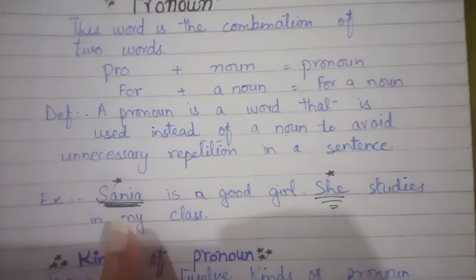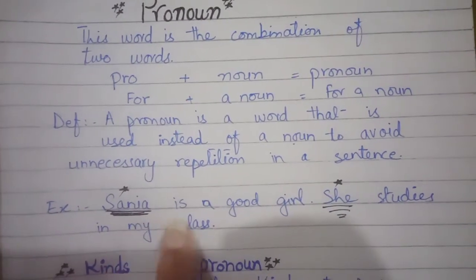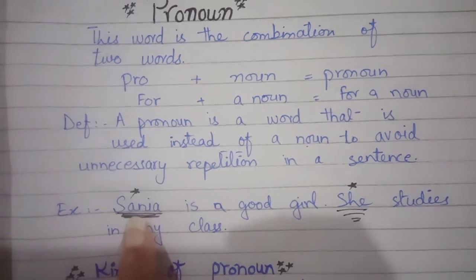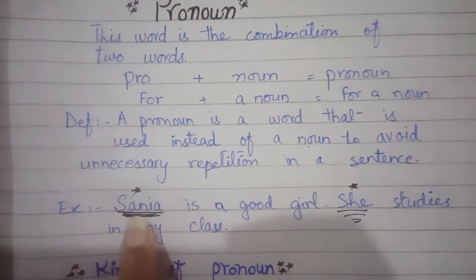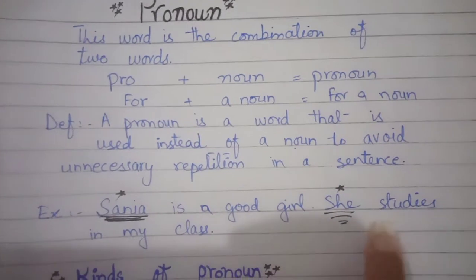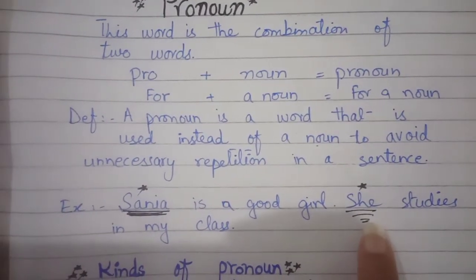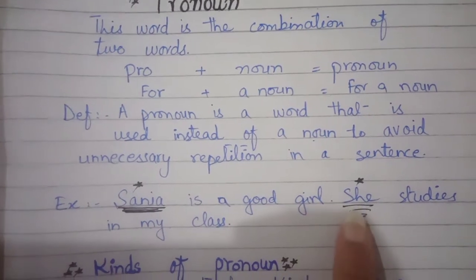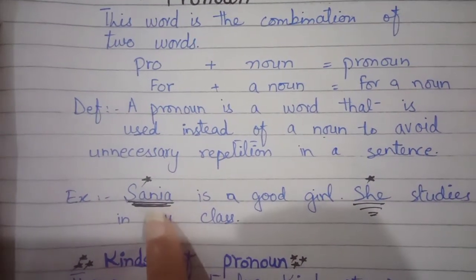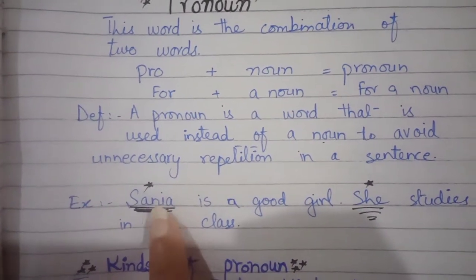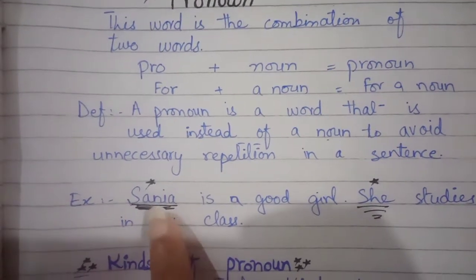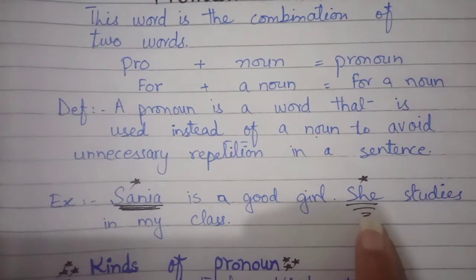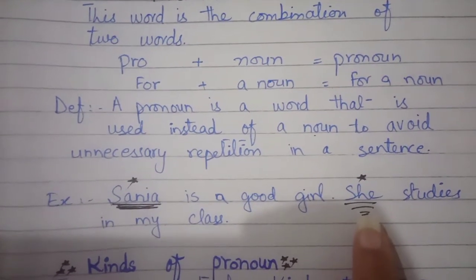Now you can see the example of pronoun. 'Sania is a good girl.' In the first sentence I am describing about Sania. In the second sentence I am not mentioning the word Sania — I am using a word instead of the noun. Sania is the name of a person, it means it is a noun, and instead of this noun I used a pronoun, so it makes our conversation easy.